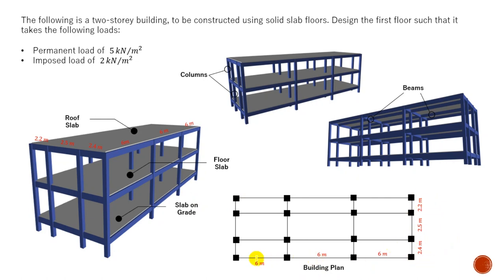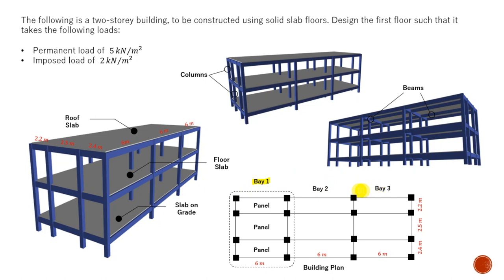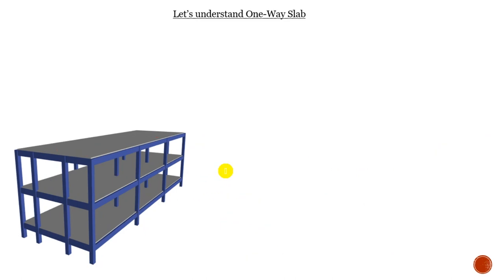We have this building plan with all the dimensions there, and we have Bay 1 — this is one bay — so Bay 2 and Bay 3. Aside from each bay, we have the panels: Panel 1 and all the panels as well. If we design this bay, then Bay 2 and 3 just follow suit — they're going to be very similar in the design, not talking about any extra loading. We have these panels and I want to design this continuous one-way slab in this particular floor.